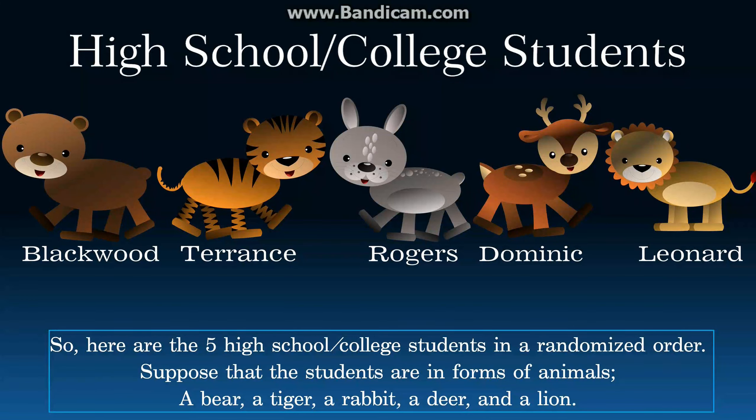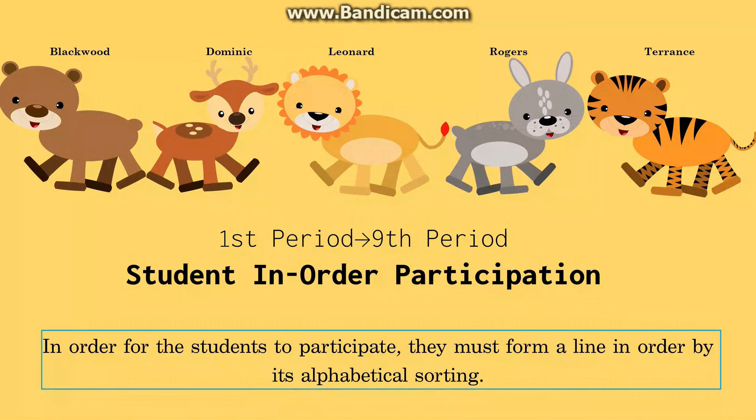So here are the 5 high school or college students in a randomized order. Suppose that the students are in forms of animals: a bear, a tiger, a rabbit, a deer, and a lion. Then, in order for the students to participate, they must form a line in order by its alphabetical sorting.